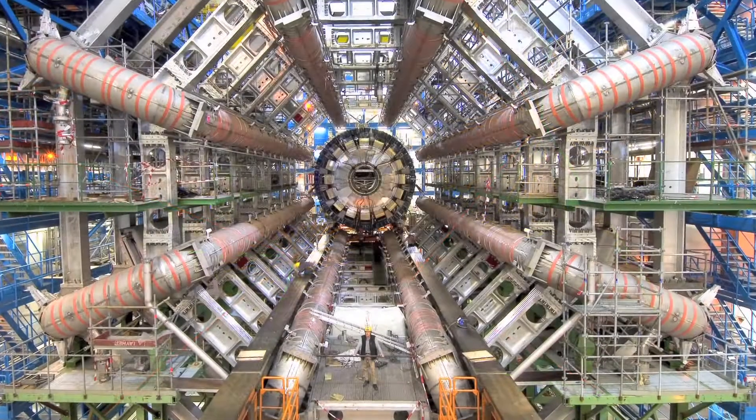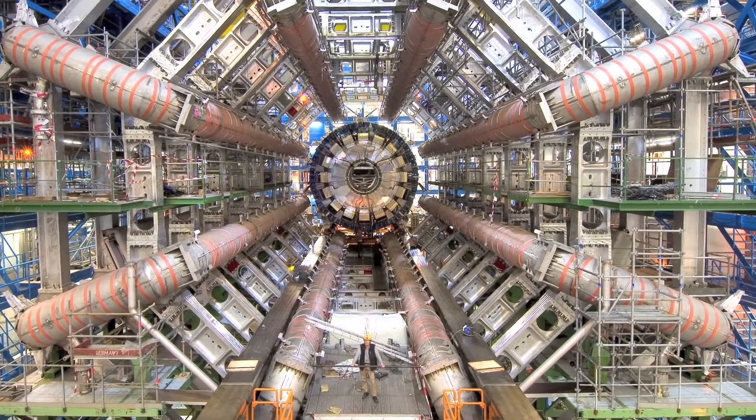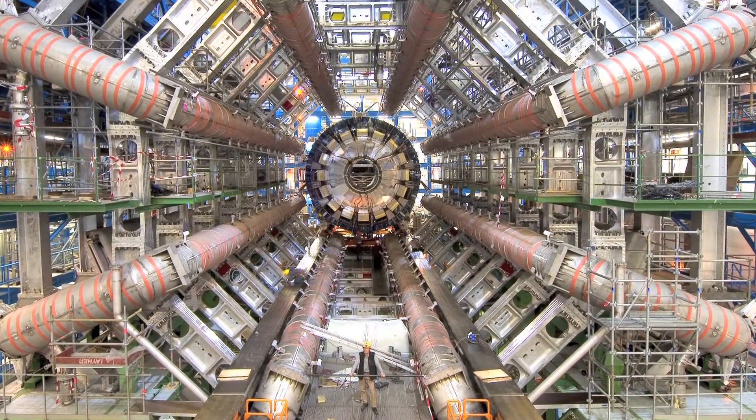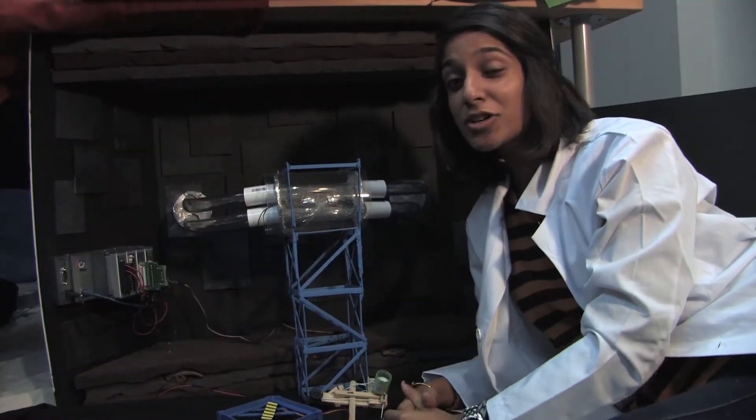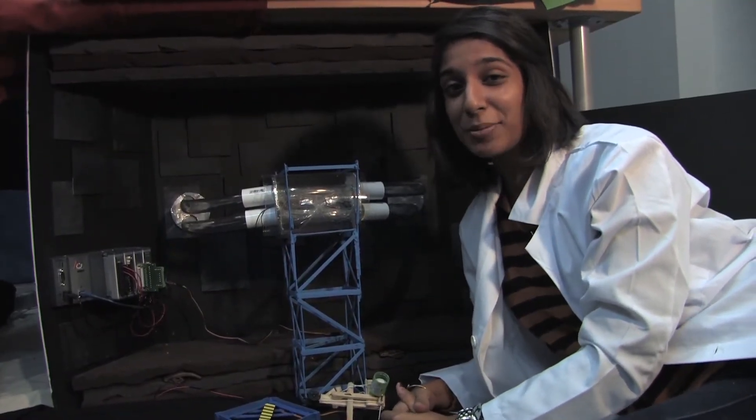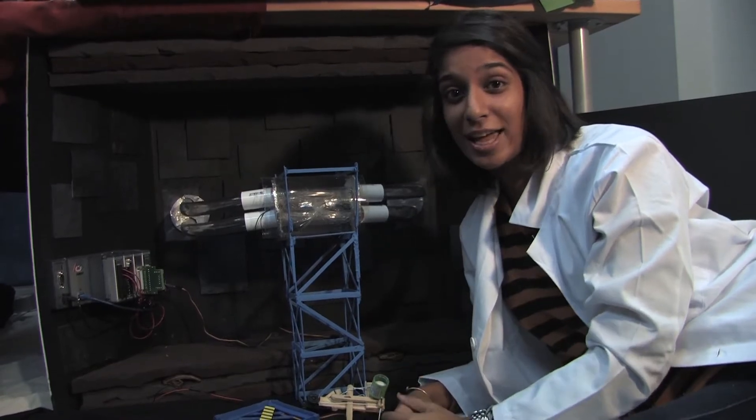This collider is located along the 27 kilometer track, 100 meters underground. By colliding these protons hundreds of trillions of times, scientists are able to detect an anomaly which is the Higgs.